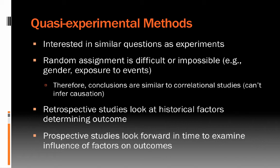There are also quasi-experimental methods. These are used when random assignment is difficult or impossible. For example, any study comparing gender differences is always quasi-experimental because we cannot randomly assign people to gender. Similarly, we cannot randomize people to experience a traumatic event like 9/11 — they did or they didn't — but that can still be used to examine outcomes. Like correlational studies, we cannot infer causation, but we can examine interesting hypotheses that may be the only way to study certain questions.